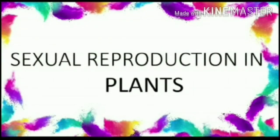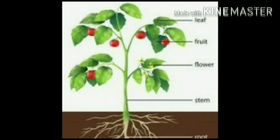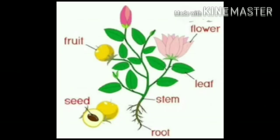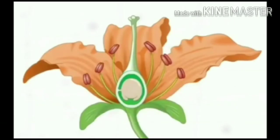Next is sexual reproduction in flowering plants. The reproductive parts of angiosperms, which means flowering plants, are located in the flower. Flowers are considered to be modified shoots. A flower generally bears a long or short axis, which has two parts: the stalk of the flower called the pedicel, and the swollen top called the thalamus. The parts of a flower are arranged on the thalamus.